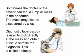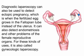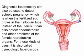Sometimes the doctor or the patient can feel a lump or mass in the abdomen. The mass may also be discovered by x-ray. Diagnostic laparoscopy is used to look directly at the mass and obtain a tissue sample for diagnosis — this is called a biopsy. Diagnostic laparoscopy can also be used to detect ectopic pregnancy, which is when the fertilized egg grows in the fallopian tube instead of the uterus. It can also detect endometriosis and other problems of the female reproductive organs. For these kinds of uses it is also called gynecologic laparoscopy.